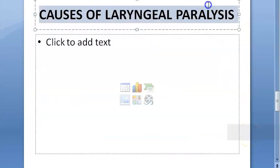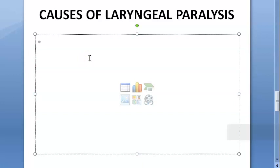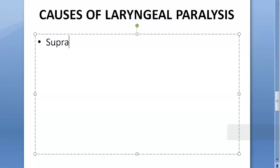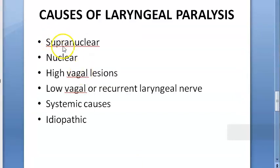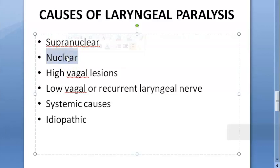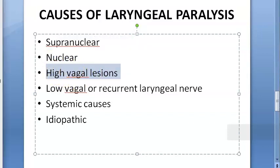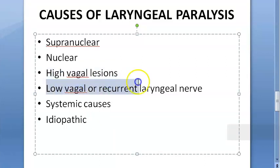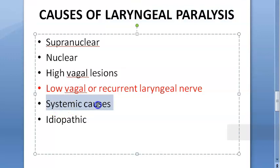Laryngeal paralysis can occur due to the superior laryngeal nerve or recurrent laryngeal nerve. Causes include supranuclear causes, which are rare; nuclear causes involving nucleus ambiguus in the medulla, such as neoplastic or polio conditions; high vagal lesions; involvement of the vagus nerve intracranially, at the jugular foramen, or in the parapharyngeal space; low vagal or recurrent laryngeal nerve lesions; and systemic causes like diabetes, syphilis, diphtheria, typhoid, streptococcal or viral infections, and lead poisoning.